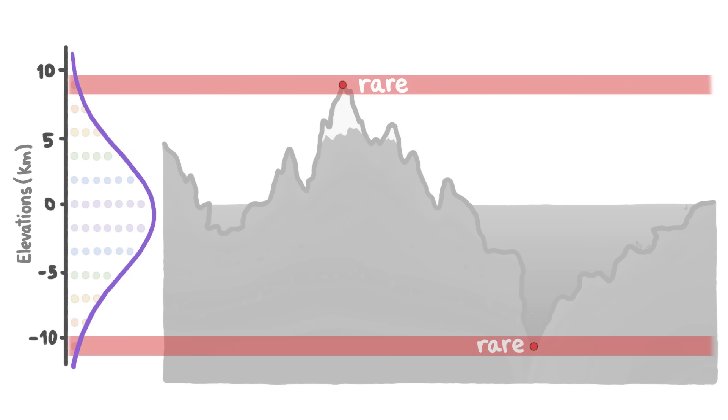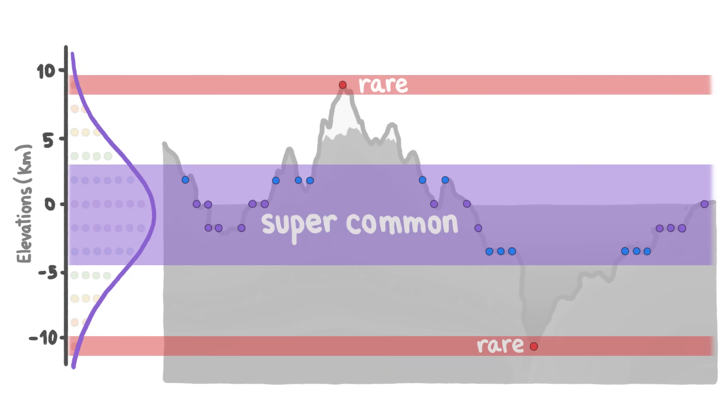you'd end up with something like this: a simple, normal distribution with very little area at the top and bottom and a big hump in the middle near sea level.